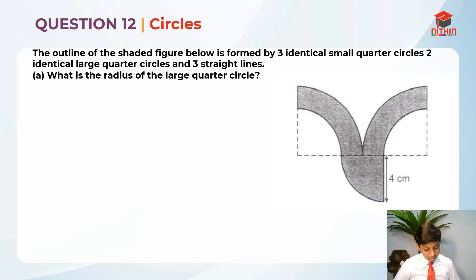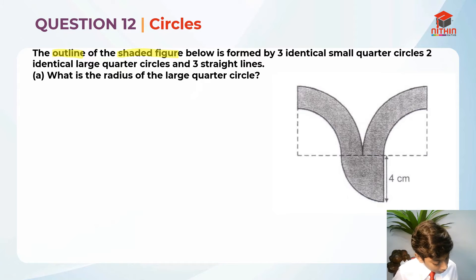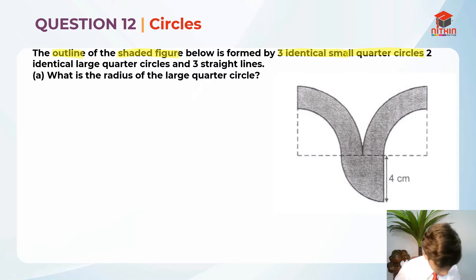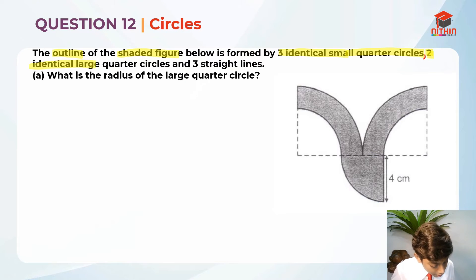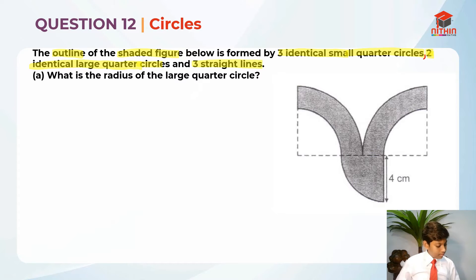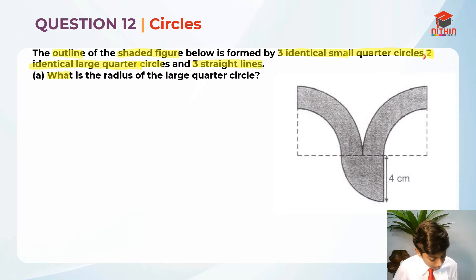Now that we have read the question, we should highlight the key information. The outline of the shaded figure below is formed by three identical small quarter circles, two identical large quarter circles and three straight lines. And they are asking us: what is the radius of the large quarter circle?